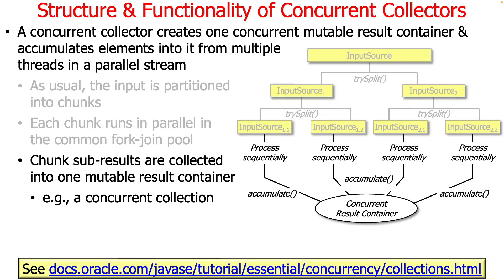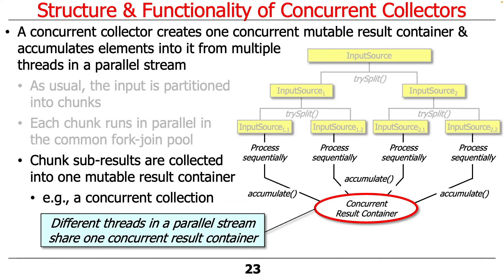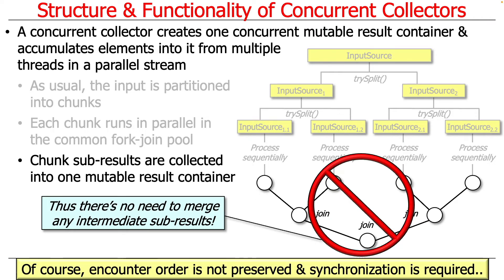All these different threads are running and accumulating into one container, so whatever you use as that container must be prepared to properly handle shared mutable state, because we're updating it — it's mutable, we're modifying it. The nice thing about this is there's no need to merge intermediate subresults. So if you have collectors that are sets or maps or things that take a while to merge, this approach might be a win under the right circumstances.